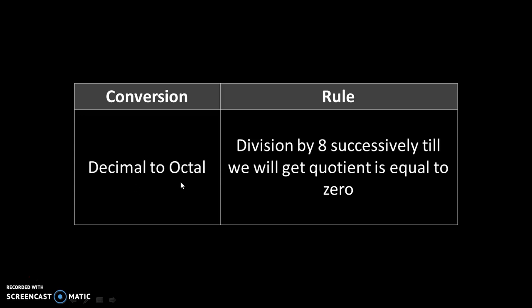Decimal to octal. Division by 8 successively till we get quotient equal to 0. We are dividing by 8 because the base of the octal number system is 8.